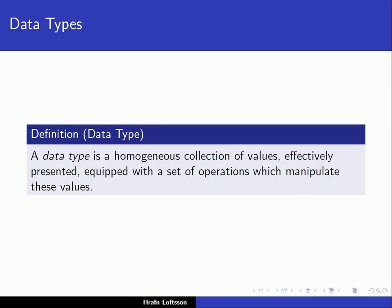Here is a definition of a data type. What is a data type? It's a homogeneous collection of values, effectively presented, equipped with a set of operations which manipulate these values. Taking the example of the integer data type — integer is usually predefined in all programming languages — an integer is a homogeneous collection of values because it represents whole numbers. It doesn't represent a string, a boolean, or real values; it just represents whole numbers, so it's homogeneous in that sense.